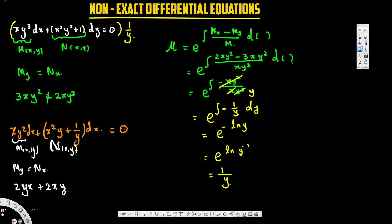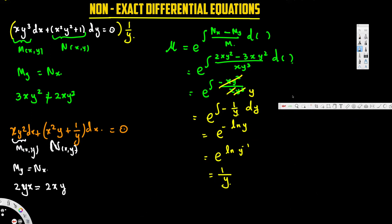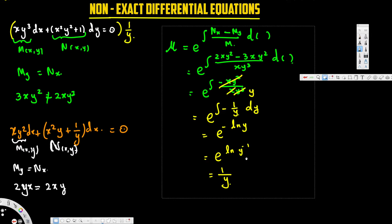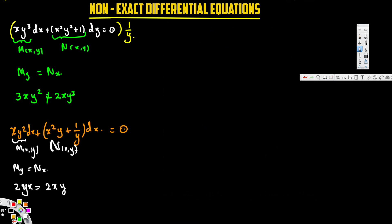My = 2xy and Nx = 2xy — both are the same, so we can proceed to solve this as an exact differential equation. The next step is to equate M(x,y) to the partial derivative of a function f with respect to x, giving xy², and equate N to the partial derivative of f with respect to y, giving x²y + 1/y.